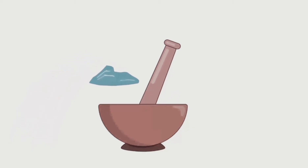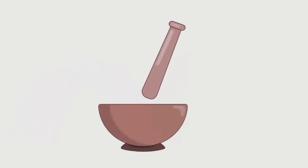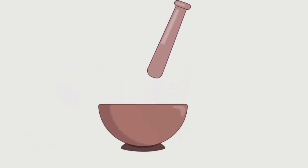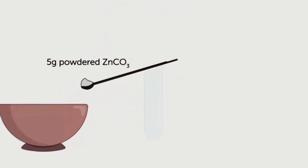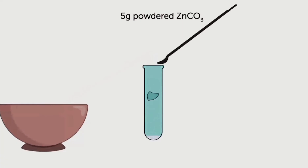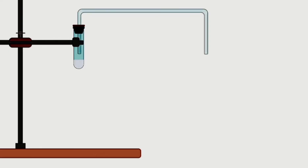Grind a small amount of zinc carbonate using the mortar and pestle into fine powder. Then take 5 grams of powdered zinc carbonate in a test tube and fix it on an iron stand. Seal the test tube with a single hole stopper. Fix the glass tube in the stopper and seal it with plaster of Paris.